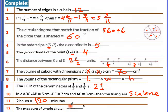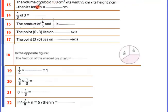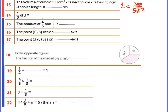The measure of a whole circle is 360 degrees. The volume is 100 centimeters cubed, width is 5, height is 2. The length is found using the rule: volume over width times height. Volume is 100, divided by 5 times 2, which is 10. So 100 divided by 10 equals 10 centimeters.